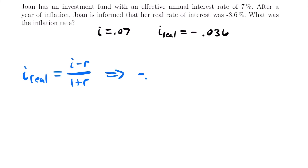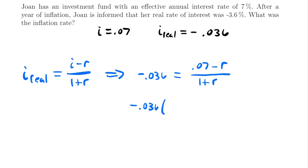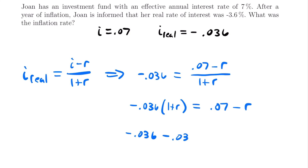Plugging in, we have that negative 0.036 equals 0.07 minus R divided by 1 plus R. Multiplying both sides by 1 plus R gives: negative 0.036 times 1 plus R equals 0.07 minus R. Distributing through, that becomes negative 0.036 minus 0.036R equals 0.07 minus R.